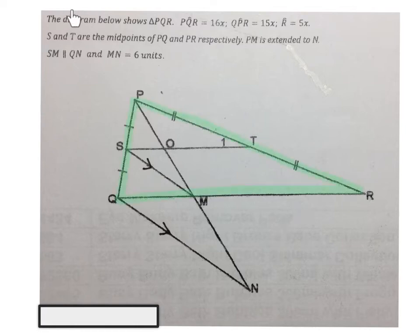In the diagram below we have a triangle PQR, indicated in green here. They said angle PQR, the angle there at Q, is 16x. Angle QPR is 15x, and angle R is 5x.